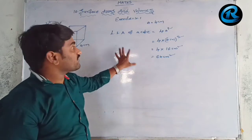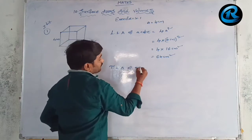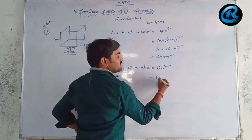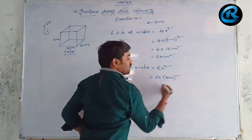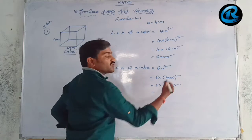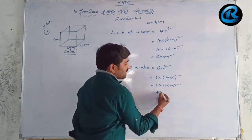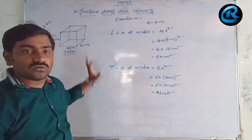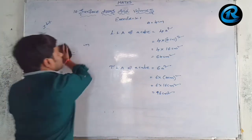Total surface area of the cube — formula is 6a². So 6 × (4)² = 6 × 16 = 96 cm². That is the lateral surface area and total surface area of the cube. Now we go for the next one.